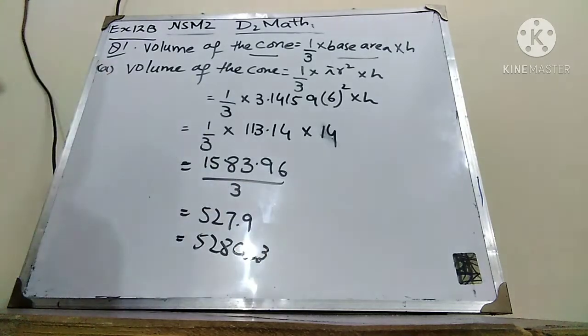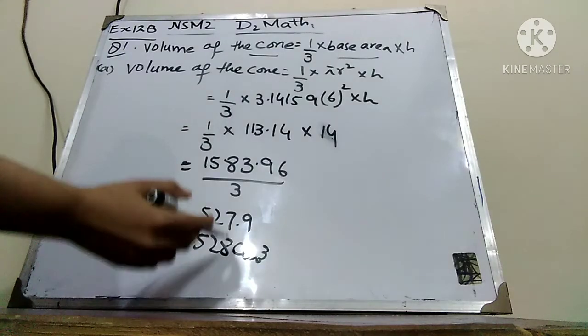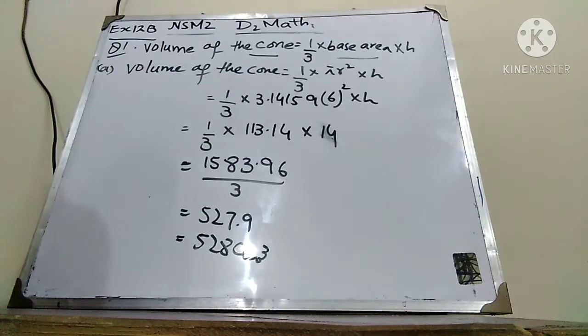So this is the volume of the cone in part A, which is 528 cm³. I hope that it is clear to you.